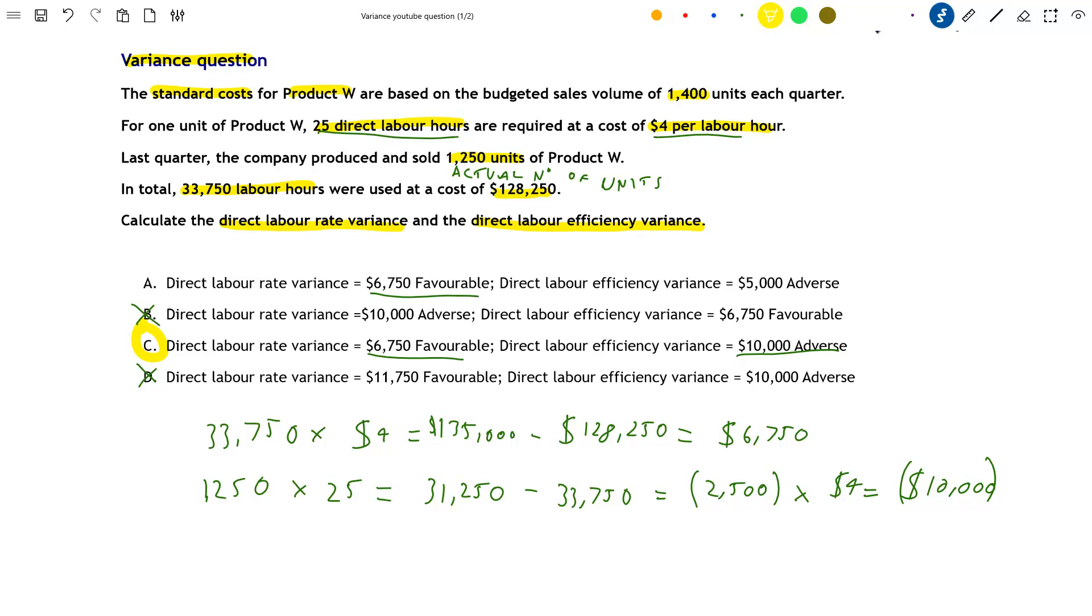What this means is that we're paying a decent rate for our labour because we have a favourable variance, but our labour is not efficient. As a management accountant, we'd then suggest ways to improve efficiency within the organization, perhaps by training staff in using certain machines or procedures to improve their productivity. That's the main reason for the adverse cost variance for labour - not the rate, which is actually favourable, but the efficiency. Labour is not efficient within this organization.